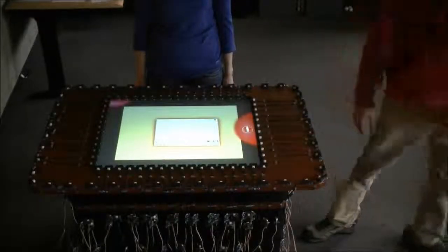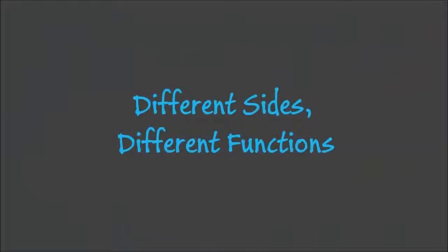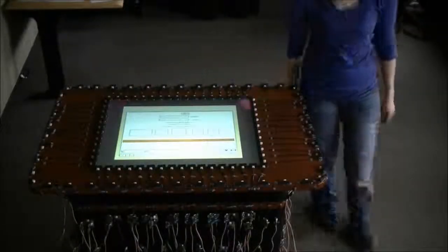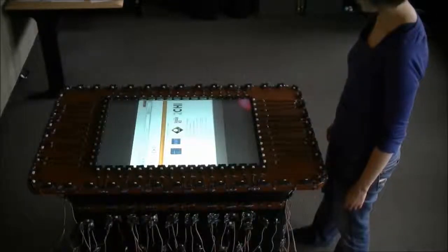ProxySketch also assigns different functionality to different sides of the tabletop. Here, the user can transition between low and high fidelity prototypes by simply walking to another side of the table, giving them a fresh point of view.